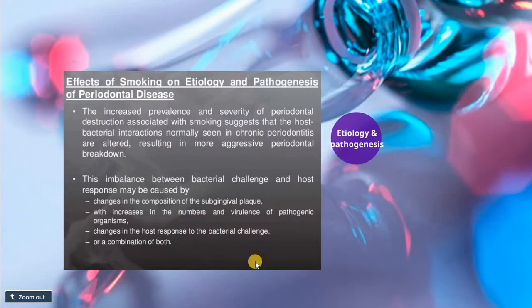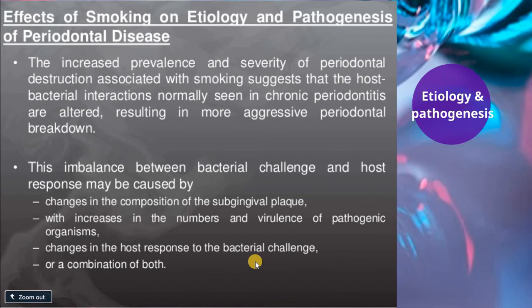Regarding the effect of smoking on the etiology and pathogenesis of periodontal disease, the increased prevalence and severity of periodontal destruction associated with smoking suggest that the normal host-bacterial interaction seen in chronic periodontitis is altered. There is an impaired immune mechanism, with a defect in the function of mononuclear cells, monocytes, and neutrophils, resulting in more aggressive periodontal breakdown.